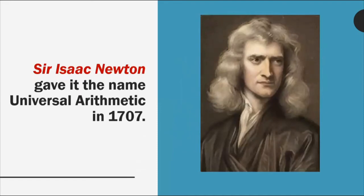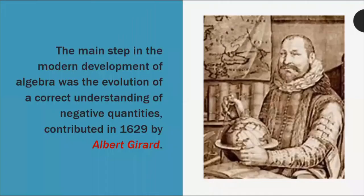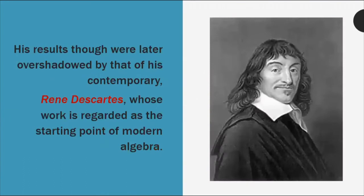In the time of Sir Isaac Newton, 1707, he gave it the name Universal Arithmetic. The main step in the modern development of algebra was the evolution of a correct understanding of negative quantities, contributed in 1629 by Albert Girard. In the time of Albert Girard, he gave emphasis to negative quantities — because now when solving equations, we include not only positive values but also zero and negative numbers.